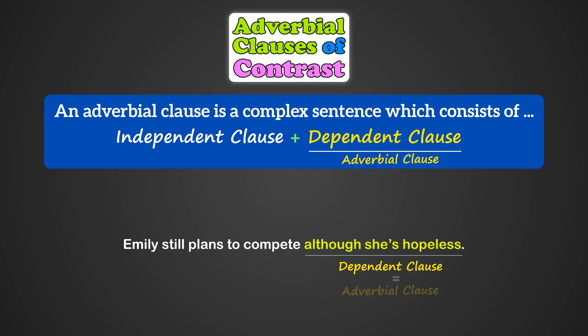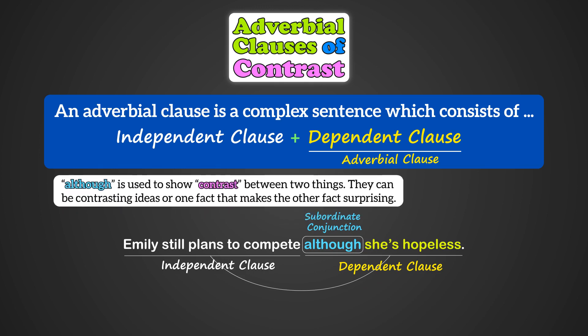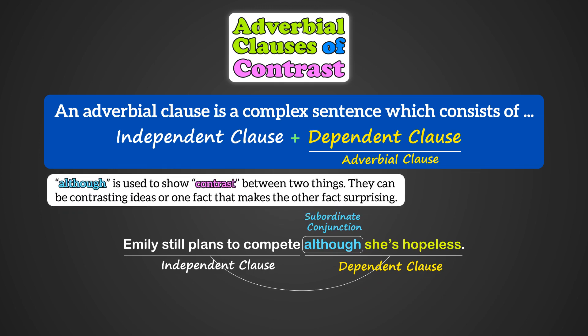But what is important here is the subordinate conjunction 'although,' which links the dependent clause to the independent clause. We generally use 'although' to show contrast between two things.